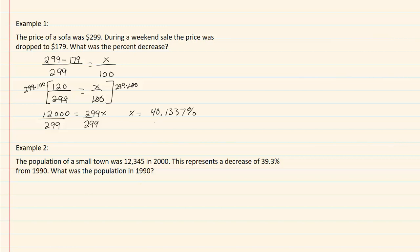In most cases you will need to round your decimal. We're going to round this one to two decimal places. Since our three is less than five, we're going to keep it at forty point one three percent for our answer.